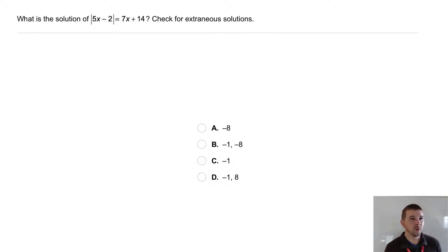Your turn. What is the solution of the absolute value of 5x minus 2 equals 7x plus 14? Check for extraneous solutions.